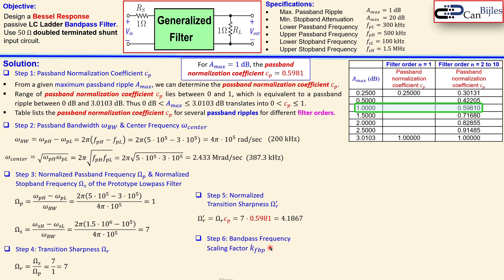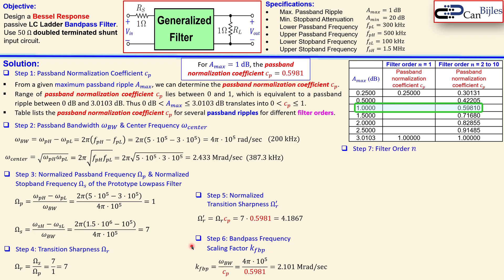The next step is the bandpass frequency scaling factor kfbp, which is the bandwidth in radians per second divided by cp. Substituting the values we have determined in steps one and two, we get kfbp = 2.101 mega-radians per second. We will use this later in the calculation of component values.